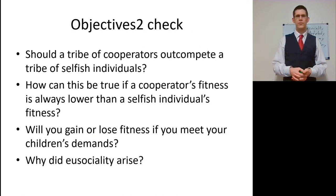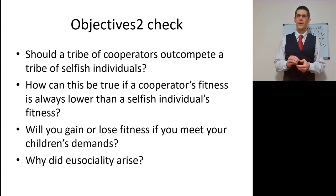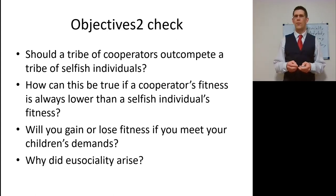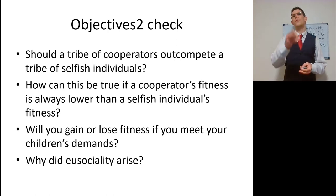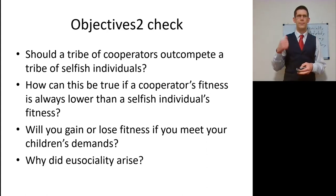Check it out for yourself: should a tribe of cooperators outcompete a tribe of selfish individuals? The answer is yes — each one gets a greater benefit and better fitness. How can this be true if the cooperator's fitness is always lower than selfish individuals? Within-group versus between-group selection. Will you gain or lose fitness if you meet your children's demands? That's a balance. And why did eusociality arise? See the previous slides.